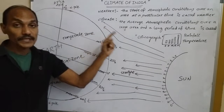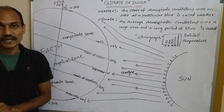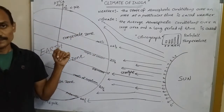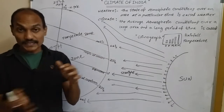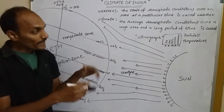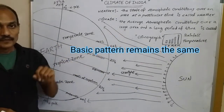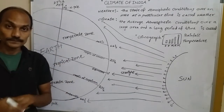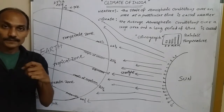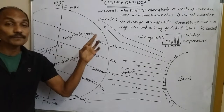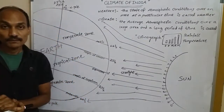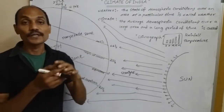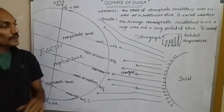Climate, however, cannot change within hours or days — it takes a long time. There are variations year to year in climate, but the basic pattern remains the same. For example, every year the rainy season generally comes in early June. Sometimes it may be late by a week or two, but the basic pattern remains the same.